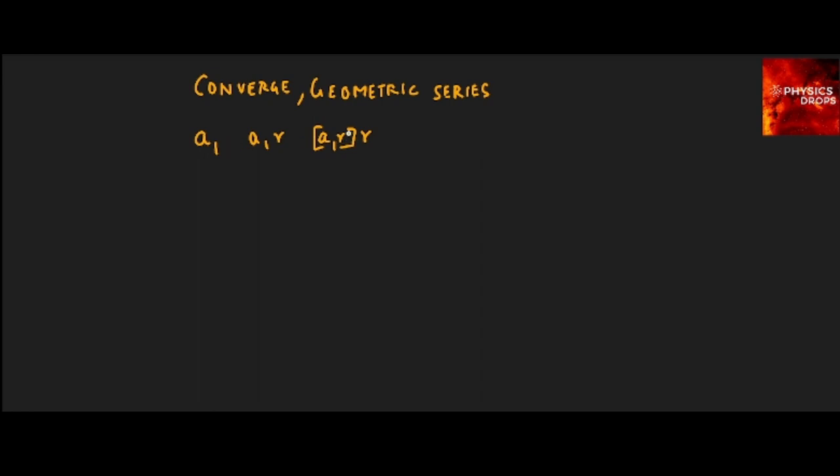This is how the sequence, the geometric series, if you add all these terms, you can call that a series. The sum of n terms of a geometric series is given by a1, which is the first term, times 1 minus the common ratio power n, which is the number of terms, divided by 1 minus the common ratio. This is the sum of n terms of a geometric series.